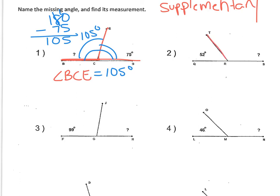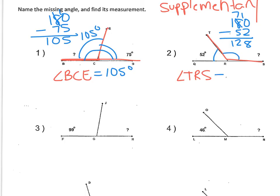The missing angle here is T-R-S. Again, together they make a 180 degree angle because they form a straight line. So we do 180 minus 52, and we get 128 degrees. So this extra angle must be 128 degrees.